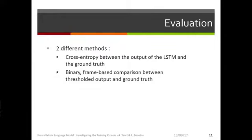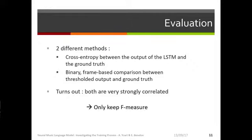To evaluate those networks, there are two different methods. The first one is to compute the cross-entropy between the output of the network and the ground truth. And the second one is to take the output of the network, which is real values between 0 and 1, you threshold it to get a binary piano roll, and then you compare that binary piano roll to your ground truth using precision, recall, F-measure, that type of stuff. But it turns out that those two methods are actually strongly correlated, so I'm only going to keep F-measure as a way of evaluating the network.